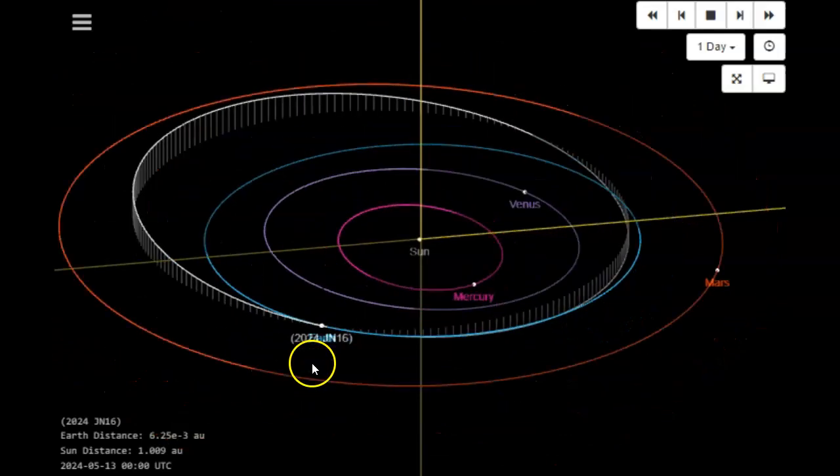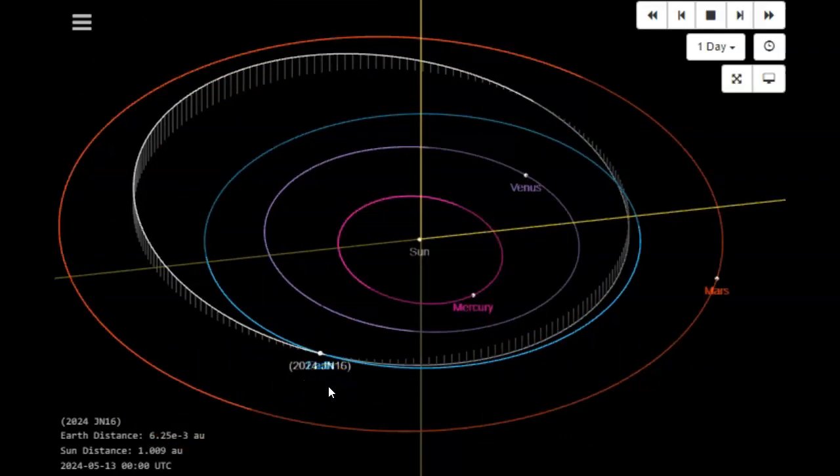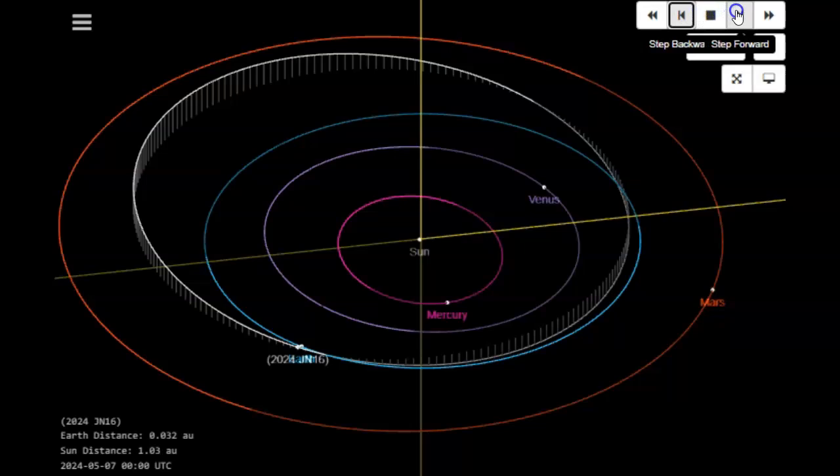Ladies and gentlemen, JPL has just released today information on a newly spotted near-Earth object, an NEO, a space rock. This one has been named 2024 JN16. And again, they just spotted this thing. We're supposed to have an extremely close approach tomorrow, May 14th. And I do mean extremely close, as you will see. It's going to shave Earth if it does not impact Earth.